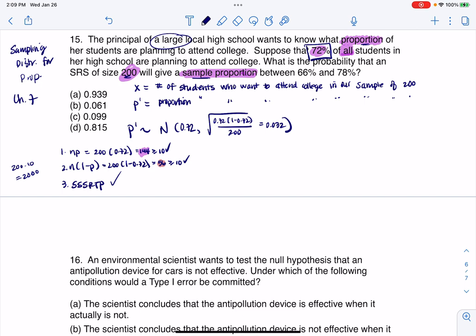So since it's normally distributed, now let's go to our probability question. It said, what is the probability that the sample proportion is between 66 and 78 percent? So I want the probability that my sample proportion, which is p prime, is between 66 and 78 percent. Since I have a normal distribution, I can go with normal CDF. We've got a little low, high. What was our mean? It was 72 percent, and our standard error was 0.032.